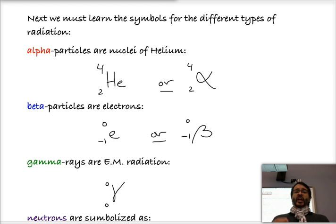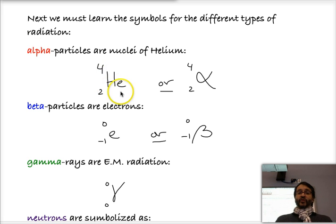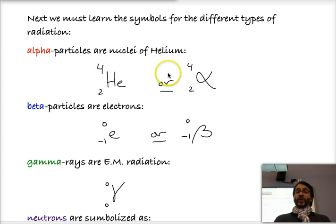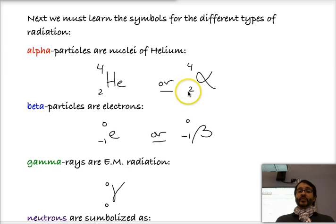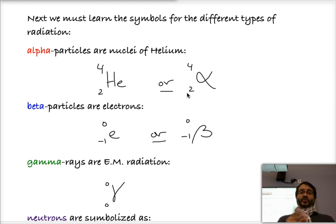In the case of alpha particles, alpha particles are the nuclei of atoms of helium-4, and so we can write it in two different ways. We can write the symbol for helium or we can write the symbol for alpha — they're exactly the same — but we're going to put 4 for the mass number in each case, and 2, which is the number of protons in a helium nucleus. So from that, we know that an alpha particle is composed of two protons and two neutrons, because 2 plus 2 adds to 4, which is the mass number.